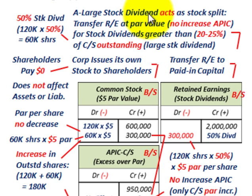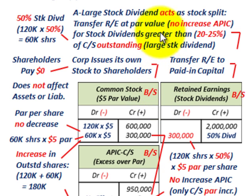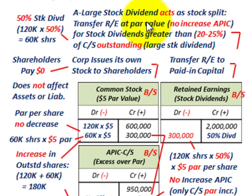The large stock dividend acts similarly to a stock split — both increase the number of shares outstanding. What we're concentrating on is how we handle these on our equity accounts, specifically between retained earnings and common stock, and what the difference is between a stock split and a stock dividend. For a large stock dividend, that means the stock dividend is greater than 20% or 25% of common stock outstanding. In this case, we have a 50% stock dividend, which is greater than that threshold, equaling 60,000 shares distributed.